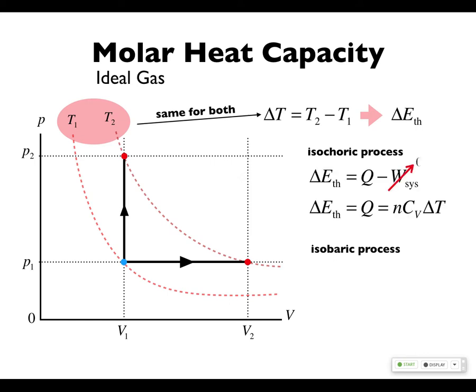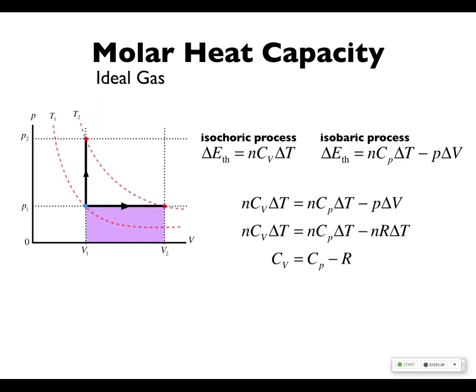The temperature change is the same, which means thermal energy should be the same for both. Same change in temperature, same change in thermal energy. In an isochoric process, your work is zero. In an isobaric process, your work is this, just the rectangle under the curve. So here's some math that you don't need to necessarily know, but if you put all this together, since you're not changing your thermal energy, you end up with this relationship. Cv is equal to Cp minus R.